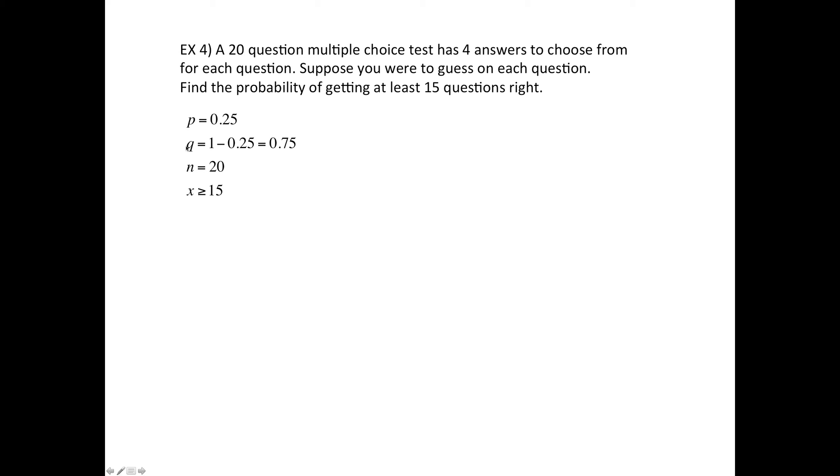Then, the chances of getting it wrong, well, that would be 3 quarters. n equals 20, and then the difference, excuse me, the difference for this one is it's saying at least 15. So that's x bigger than or equal to 15.